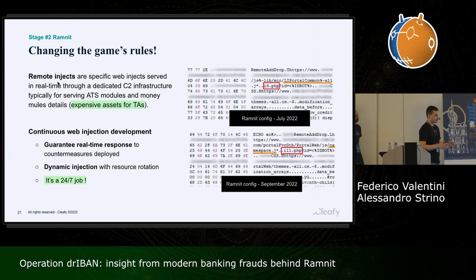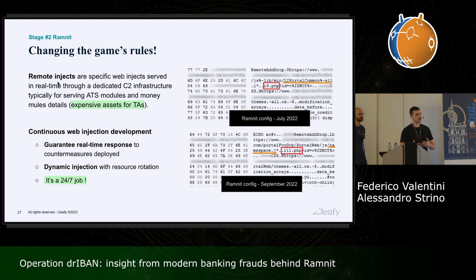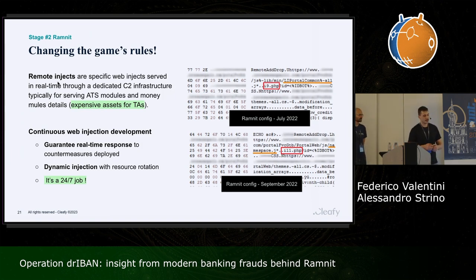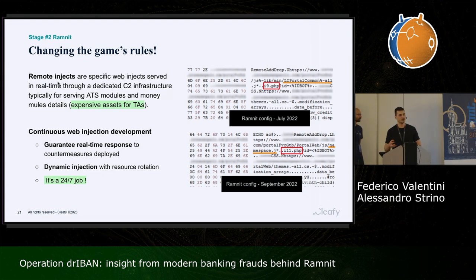Moving web injects to a server-side command-and-control infrastructure changed the rules of the game. Web injects are served in real time from a dedicated C2, because the ATS module and money mule details are among the most expensive assets for the threat group. This also allows them to perform continuous web inject development without pushing new configurations to the entire botnet, and maintaining that level of continuous development is essentially a 24/7 job.